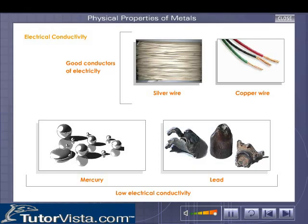Electrical conductivity: metals are good conductors of electricity. Silver and copper are very good conductors and are used for making conducting wires. Lead and mercury are exceptions as they have low electrical conductivity. Generally, the electrical conductivity of metals decreases with increase in temperature.